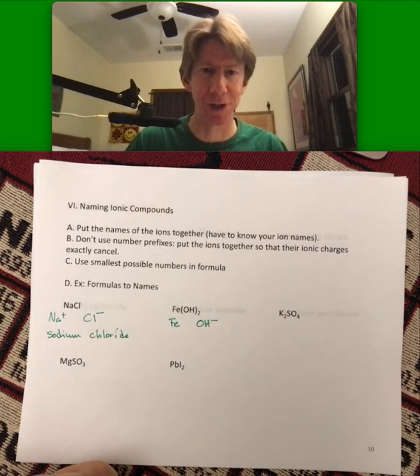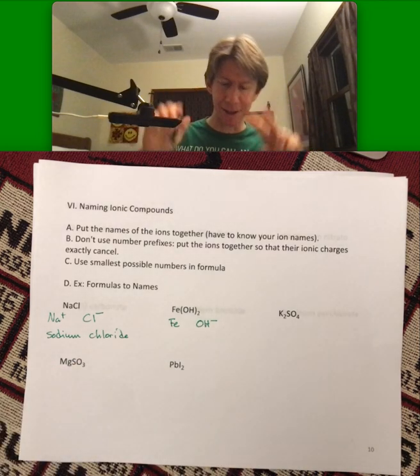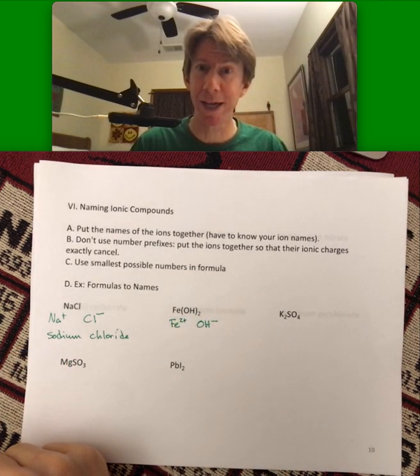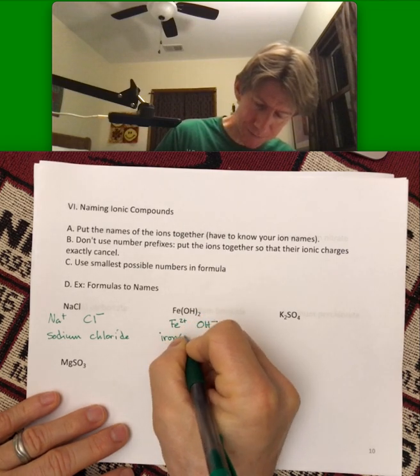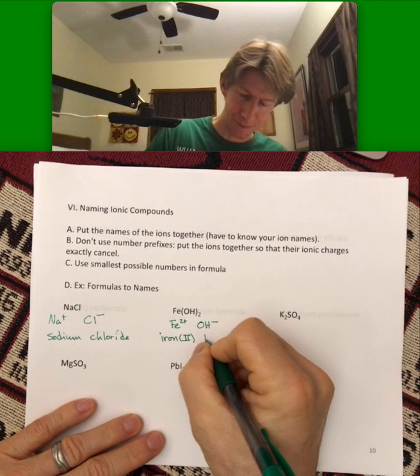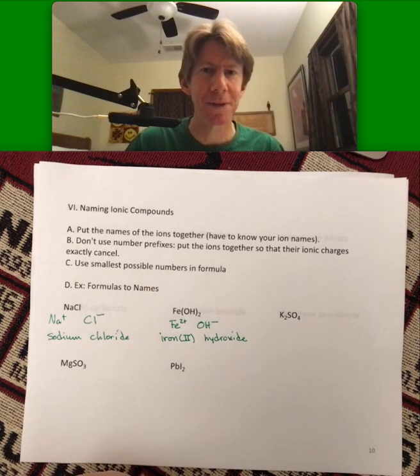So we're going to rely on the fact that we have memorized the OH is hydroxide. And it has a minus one charge. And there's two of them. And that means, since that's two negatives, we have to have two positives, which means this has to be plus two. And we can't name it until we do that. That's how we have to take it apart. That's our process. But once we do that, we can see this is iron two, and the other one's hydroxide.